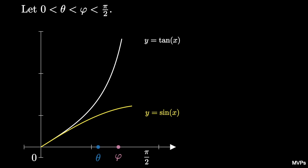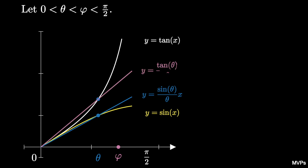The secant line connecting the origin to the point (theta, sine of theta) has the equation y equals sine of theta over theta times x, and this secant line lies above sine of x for x larger than theta. Similarly, the secant line connecting the origin to (theta, tangent of theta) has the equation y equals tangent of theta over theta times x, and this secant line lies below the tangent function.